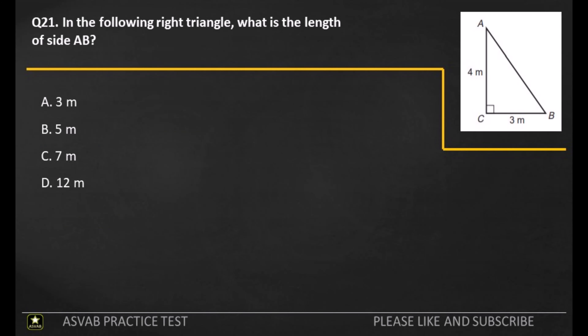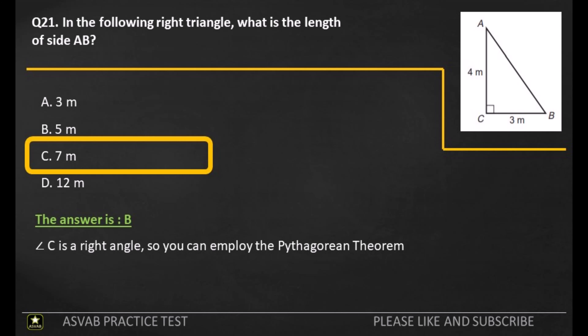Q21. In the following right triangle, what is the length of side AB? A: 3 meters. B: 5 meters. C: 7 meters. D: 12 meters. The answer is B. C is a right angle, so you can employ the Pythagorean theorem.